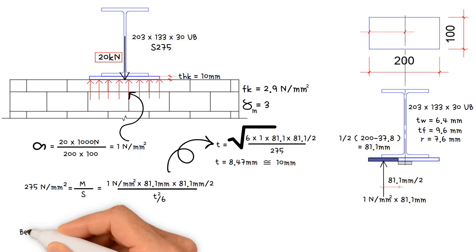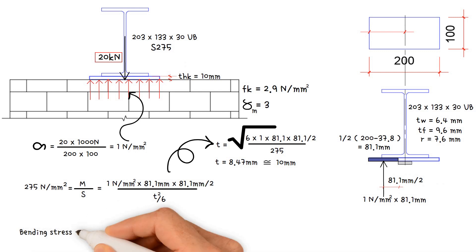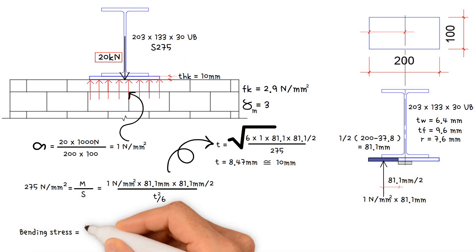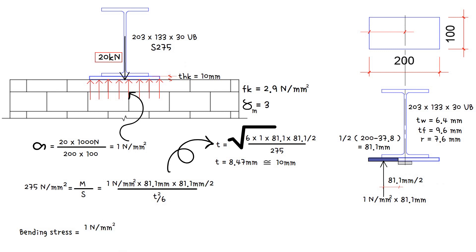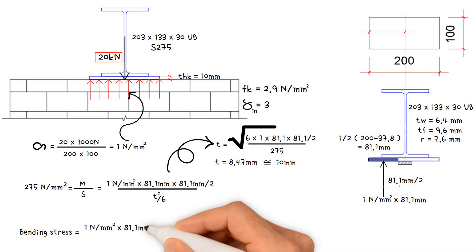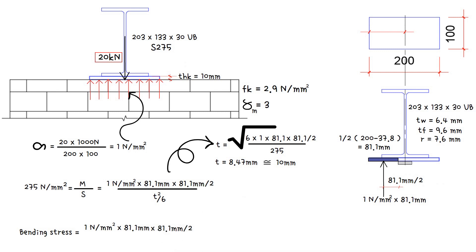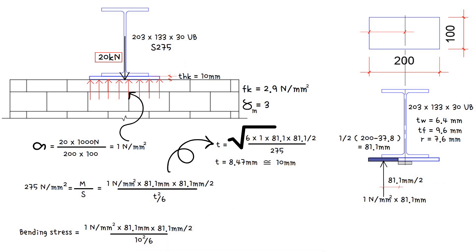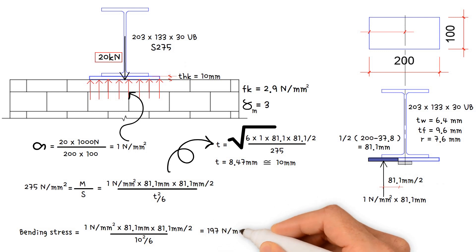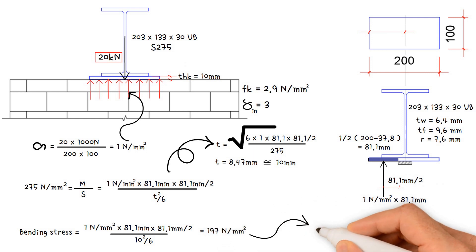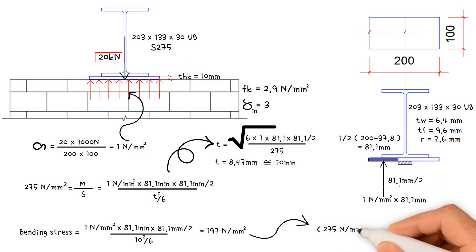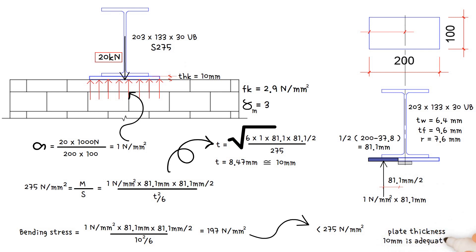Finally, we need to examine the bending stress in the plate, which equals the stress under the plate (1 N/mm²) times the bearing plate projection length (81.1 mm) times half the bearing plate projection length (81.1 mm), divided by the section modulus (10 mm² / 6). This results in a value of 197 N/mm², which is lower than the yield strength of 275 N/mm². The plate thickness of 10 mm is therefore considered adequate.